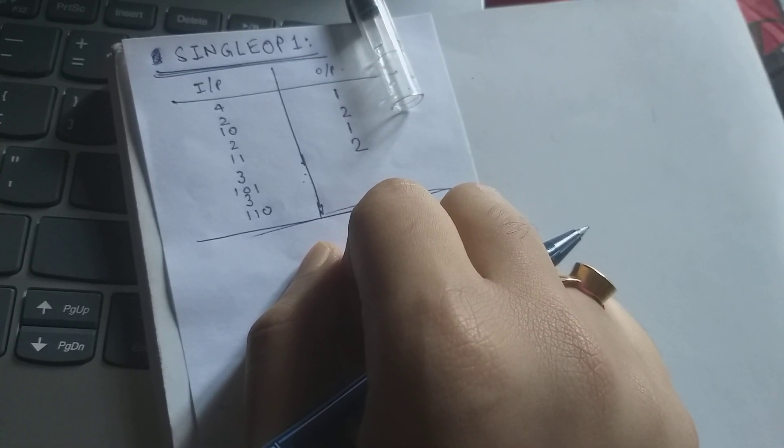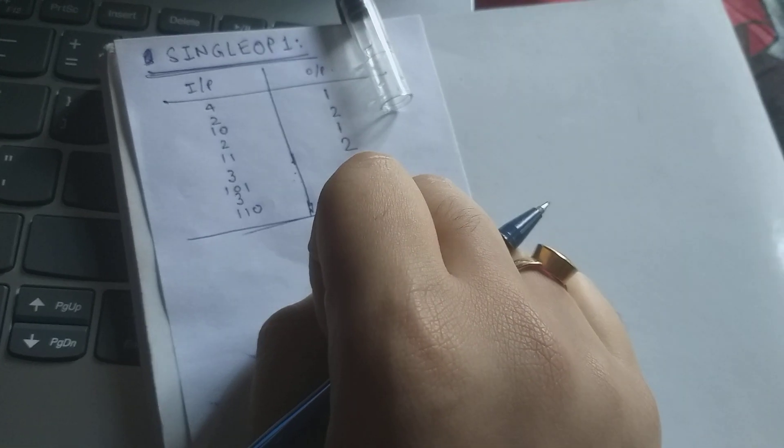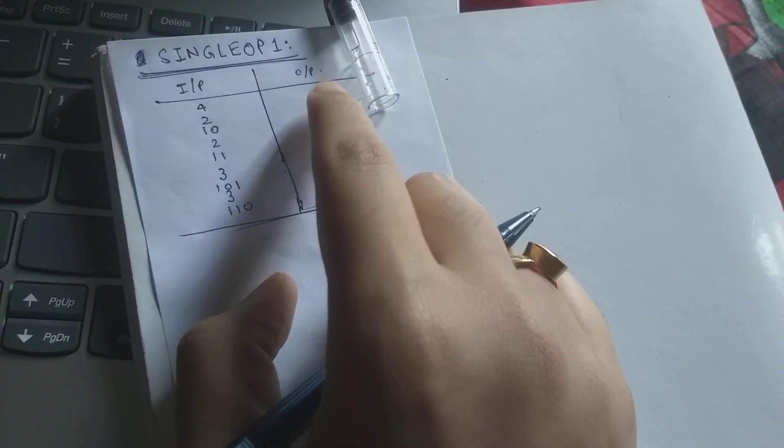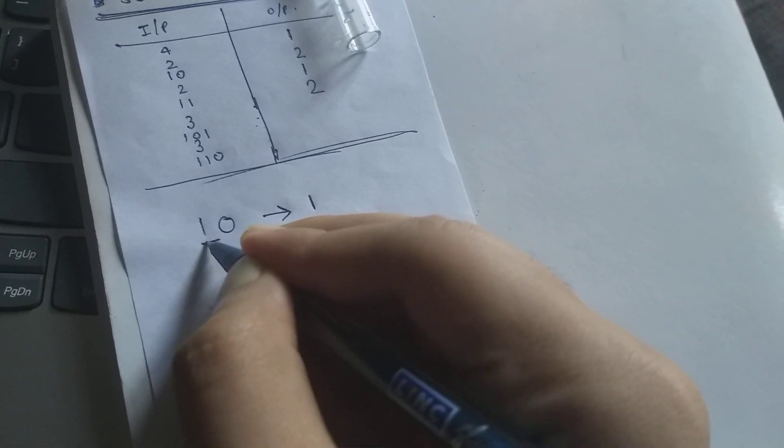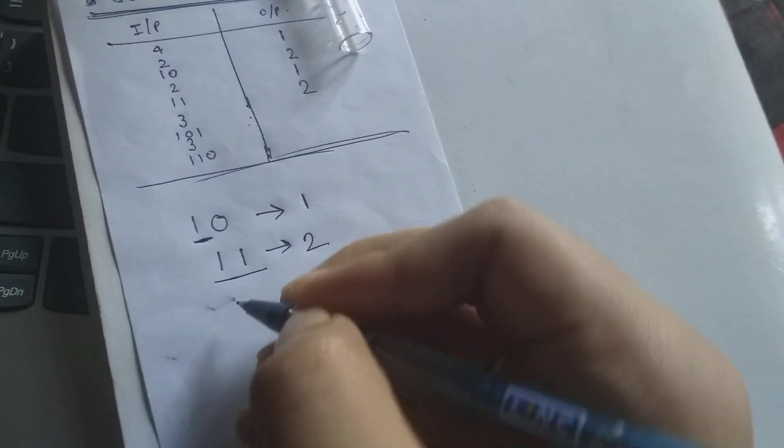After looking at the input and output test cases we can figure out that the output depends on the number of ones from the beginning. Let me explain this to you. If it's 10 then the output will be 1, that is from the beginning how many ones are there, only one. For 11 the output will be 2, how many ones are there, 1, 2. For 101 the output will be 1 again because only one one is there from the beginning. For 110 the output will be 2 because there are 2 ones.